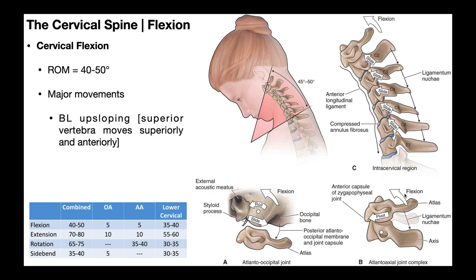The big thing to understand for cervical flexion is bilateral upsloping on both the left and right facet joints. The superior vertebra moves both superiorly and anteriorly. The major effects are they gap the facet joints into a more open-packed position, and the intervertebral foramen at each level has more space — meaning more space for the nerve roots.